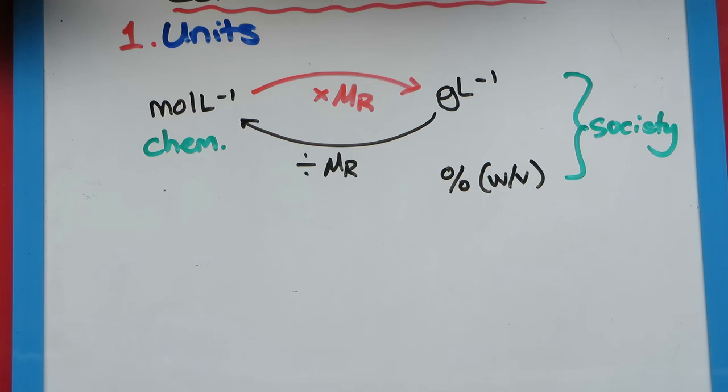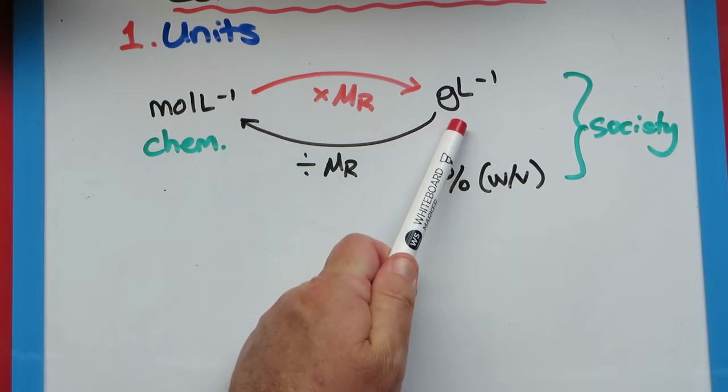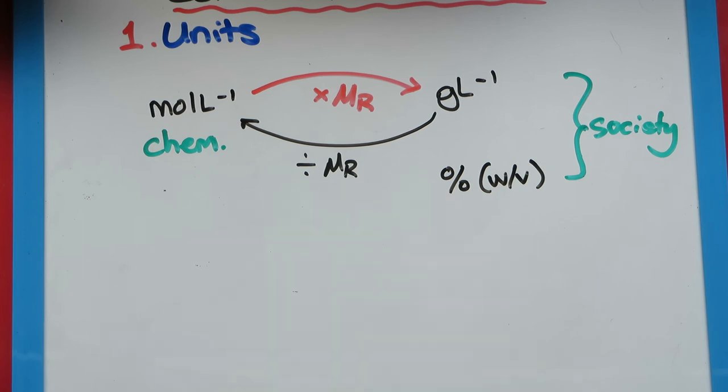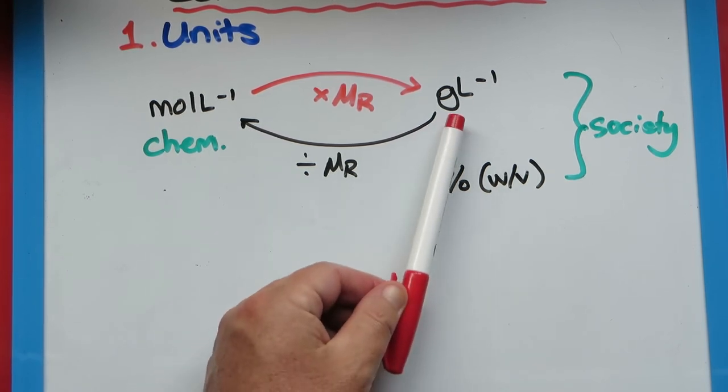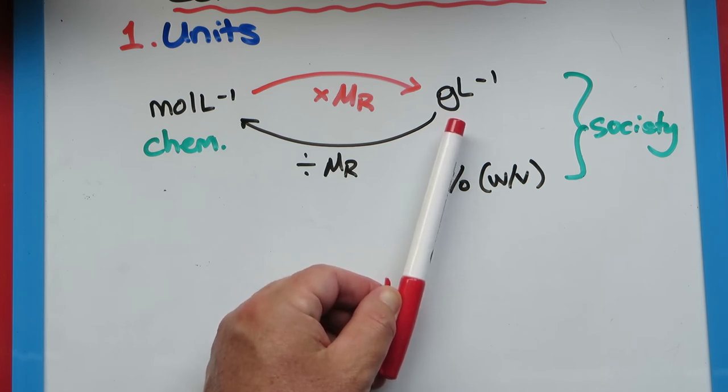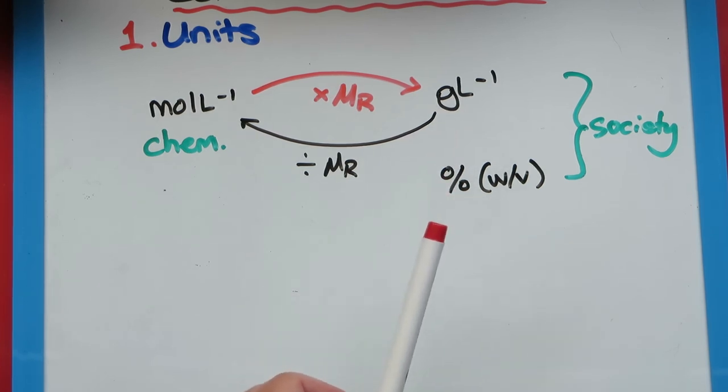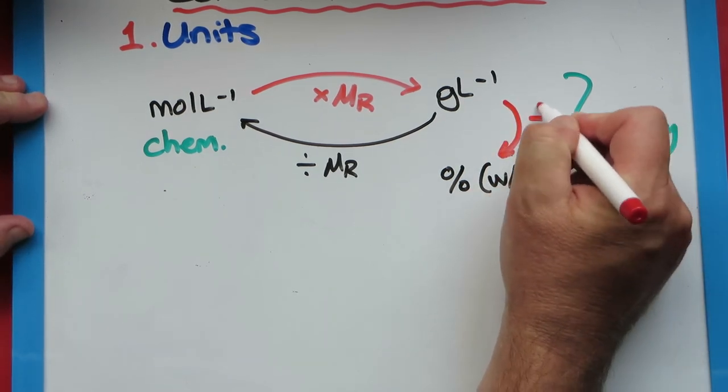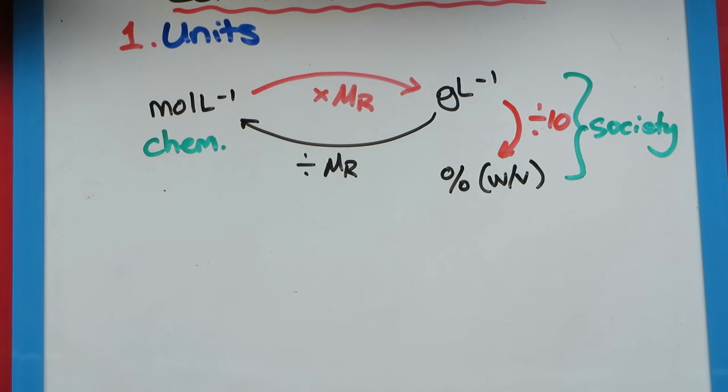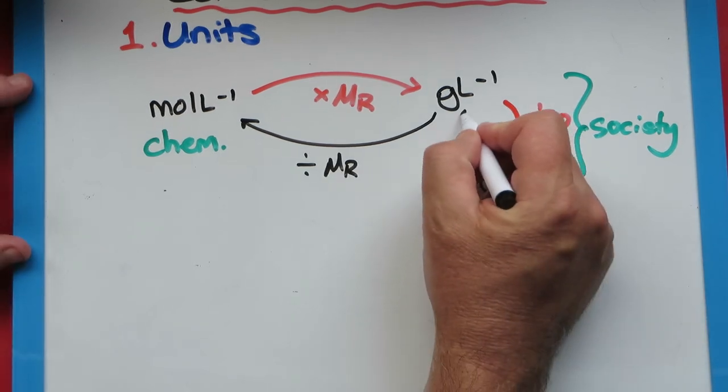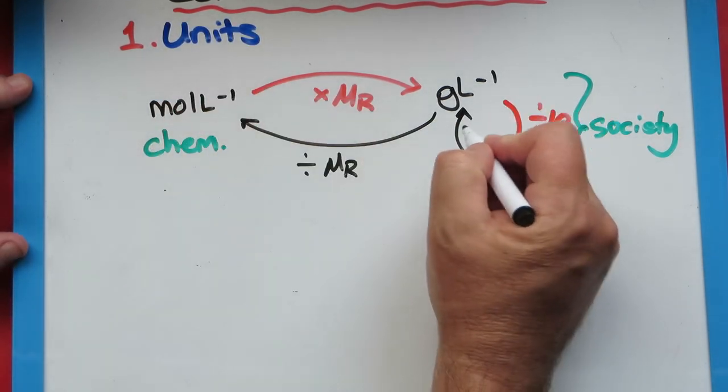Now grams per liter and percentage are actually really easy, because this is grams per liter and this is grams per hundred mils. It's just the times and the divided by, right? So let's say we had 10 grams per liter—10 grams in a thousand mils. That means that in a hundred mils there'd only be one gram, so it'd be one percent. To go from grams per liter to percentage, I'm going to divide by 10. And no surprise, if I'm told the percentage or I know the percentage, to get back into grams per liter so I can then turn it into moles per liter, I go times 10.